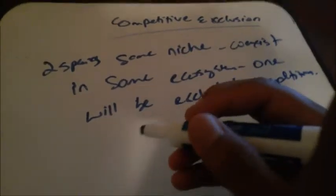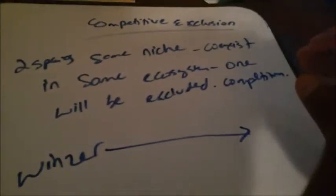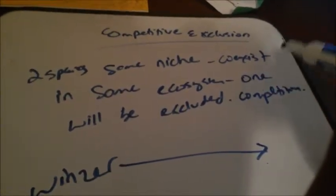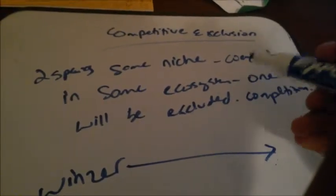The idea of competitive exclusion is very simple: if two species with the same niche coexist in the same ecosystem, then one will be excluded because of competition. Obviously, if there's a competition, there can't be two winners — there has to be one winner. So basically, if two species compete for the same resources in an ecosystem, they cannot coexist because one won't be able to get the resources and the other one will.